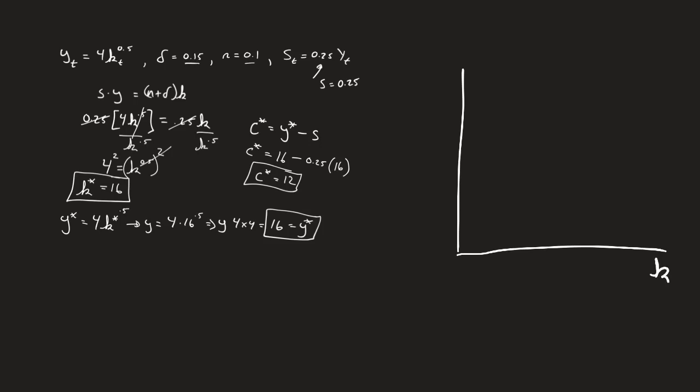If I want to graph this in our normal Solow model that we've been working with in this class, it's k versus investment and the amount of investment that's needed to be in steady state. So I draw my S F of k. We also have a technology parameter in there. In our case, it's 4. And then we draw this. This right here is my n plus delta times k.